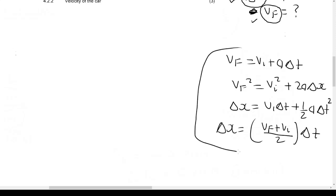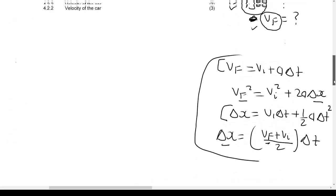And delta x equals final velocity plus initial velocity divided by 2, all multiplied by delta t. You have to choose the suitable one. You can't use equations with both final velocity and delta x as unknowns.